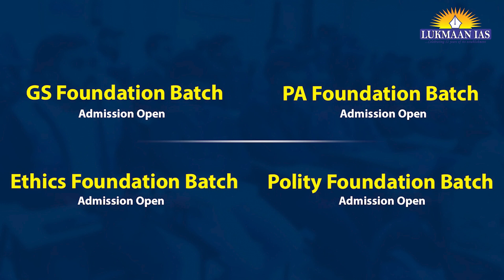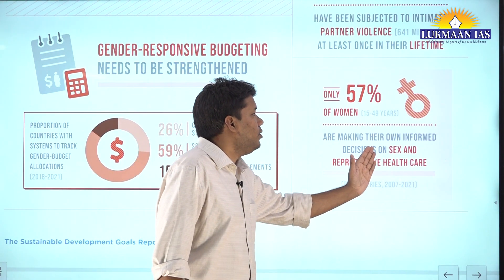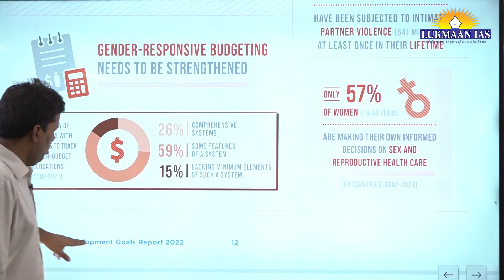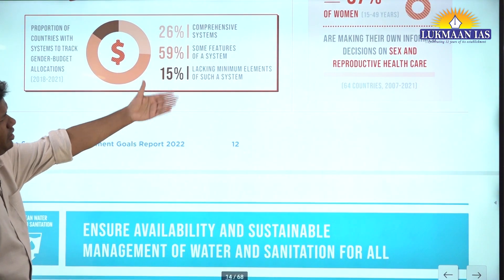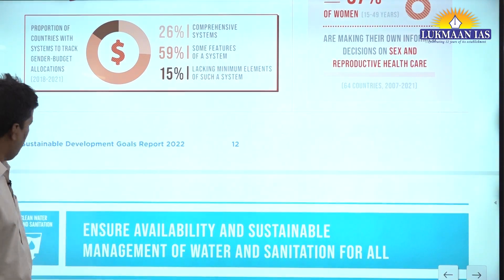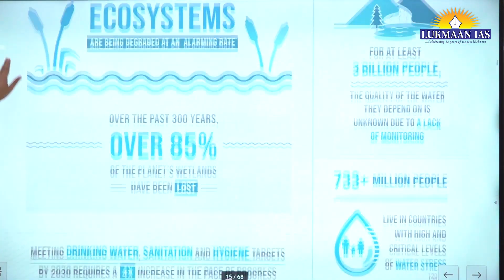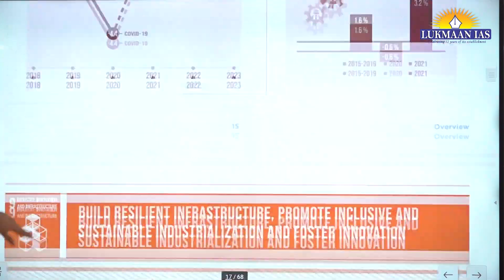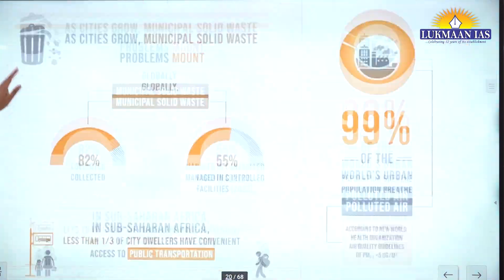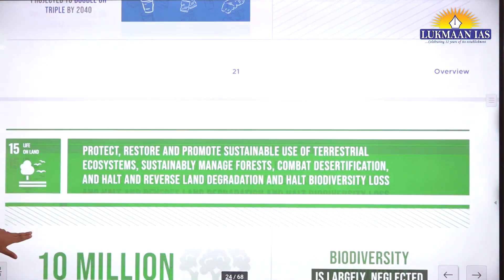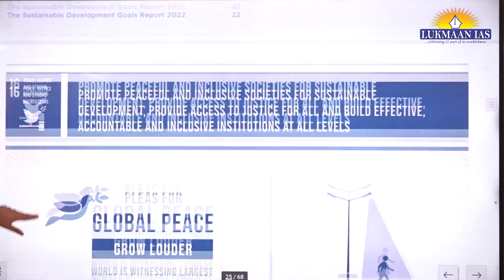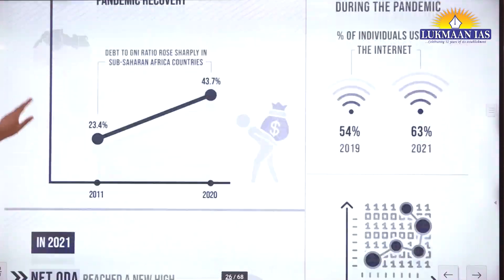Only 50 to 57 percent of women aged 15 to 49 years are making their own informed decisions on sexual and reproductive health care - related to the right to life and abortion. This is a very important report that will help you in GS2 and GS3. If you mix these thoughts with Economic Surveys, SDG reports, and Human Development Reports, you are going to write wonderful answers.